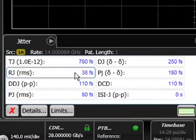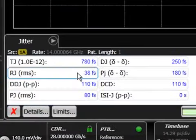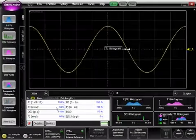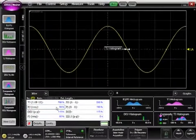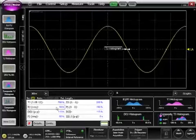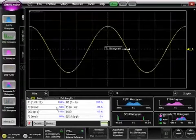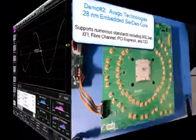It then calculates total jitter at a user-specified BER. Here you can see that the random jitter is well below 50 femtoseconds RMS, which gives the designer confidence that when measuring a high-speed signal, such as a 28 gigabit signal, the jitter measurement is that of your DUT and the contribution from the scope is negligible.